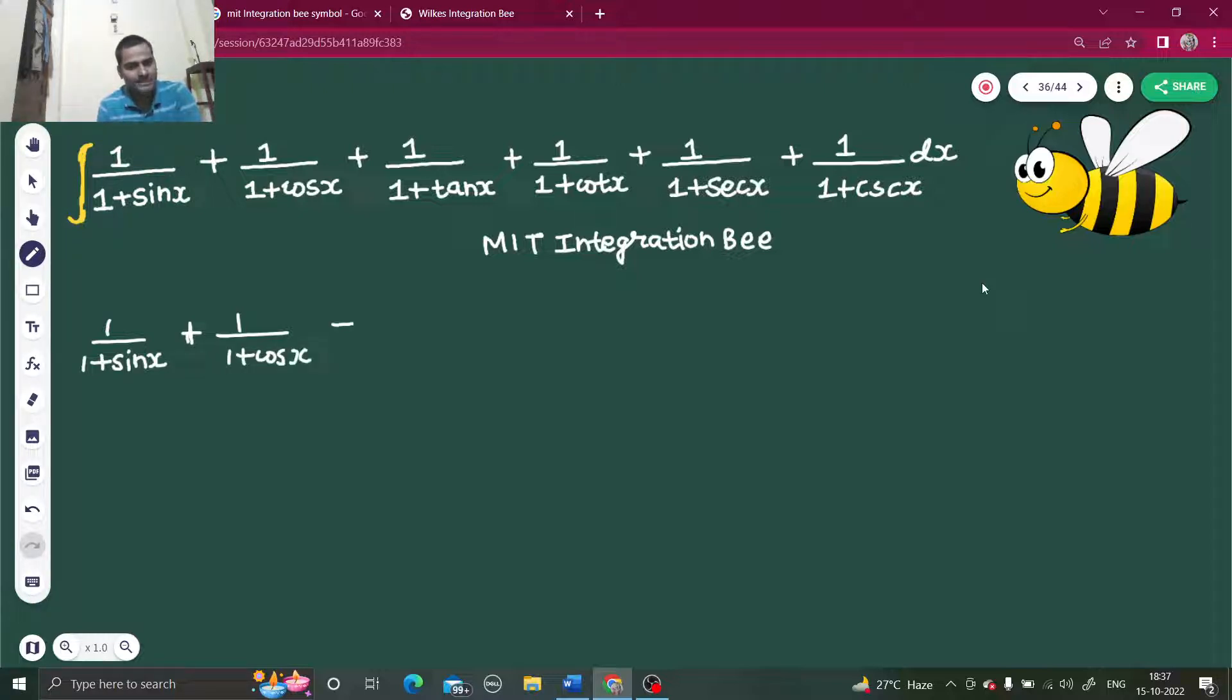For tan x, I can write that as 1 upon 1 plus sin x divided by cos x. I am writing each and every step so that you don't face any confusion. Otherwise, it's a question involving just a single step. 1 upon cos x divided by sin x.